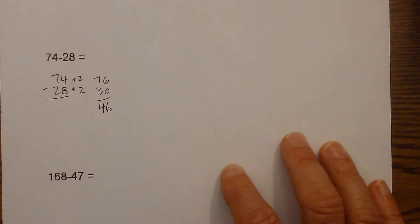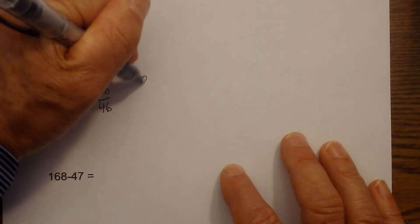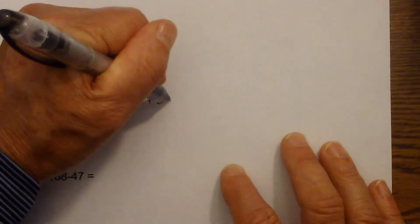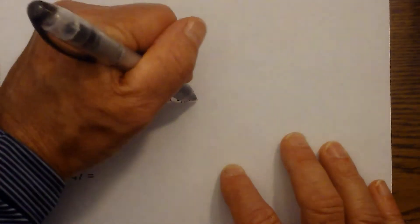Or again, I could add 28, I am going to add 2 that gets me to 30, add 40 that gets me to 70, add 4 that gets me to 74, 4 plus 2 is 6, 6 plus 40 is 46.